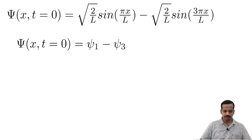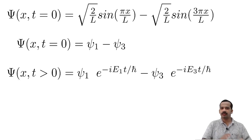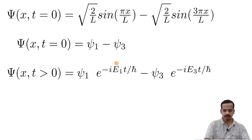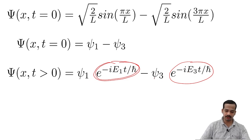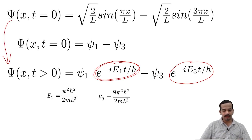In symbolic notation, the given state is psi-1 minus psi-3. The state at t greater than 0 is obtained just by plugging in the respective time-dependent exponential factors: e to the power minus i E1 t by h-bar is multiplied with psi-1, and e to the power minus i E3 t by h-bar is multiplied with psi-3. That gives the time evolution of the state, where E1 and E3 are given by the energy eigenvalue expressions.